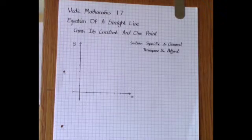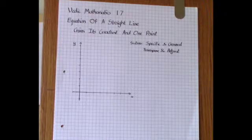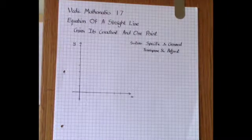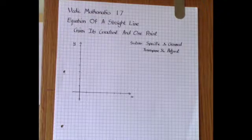I'm going to show you the Wadig method. It's a one-line method for obtaining the equation and it relies on the sutras specific in general and transpose and adjust. But first of all I'm going to show the two conventional methods to do this.